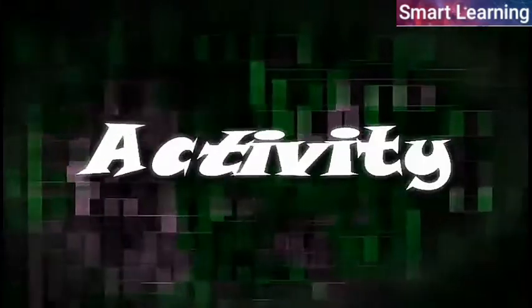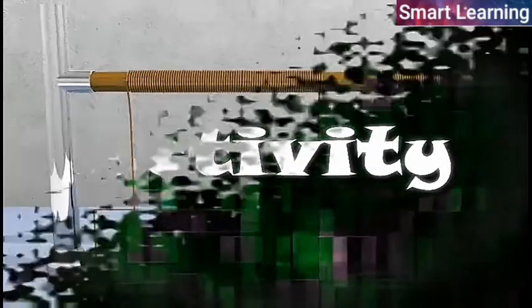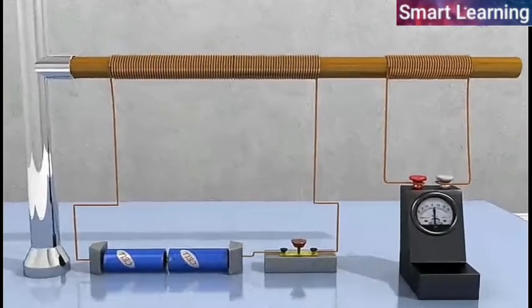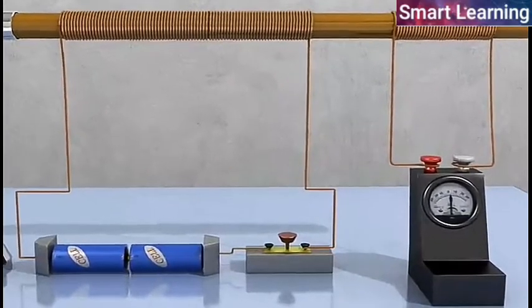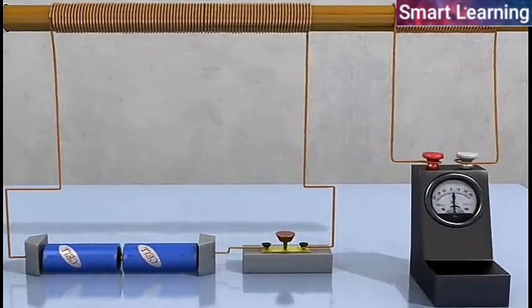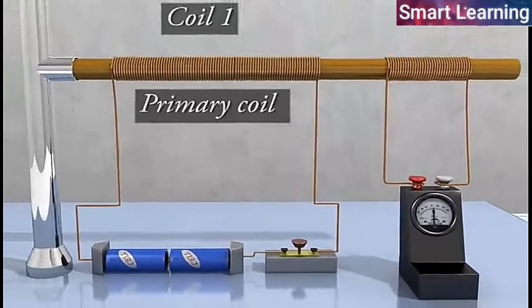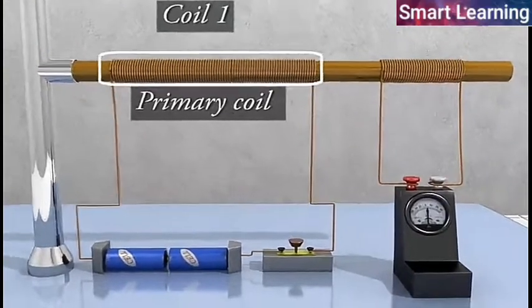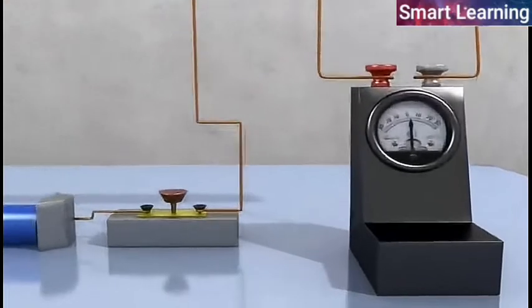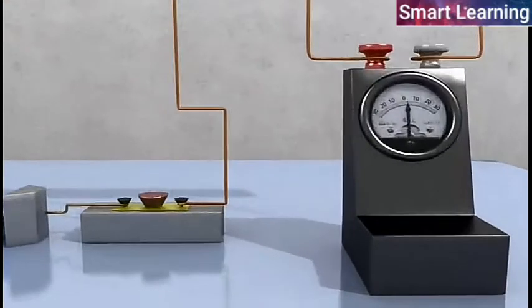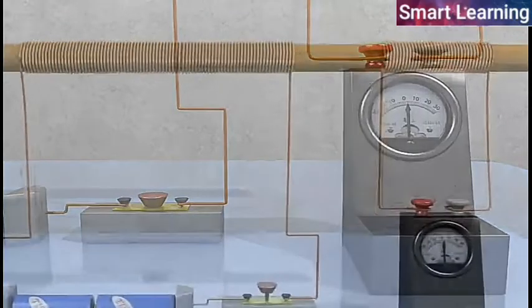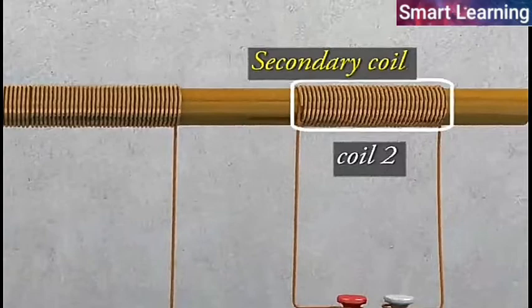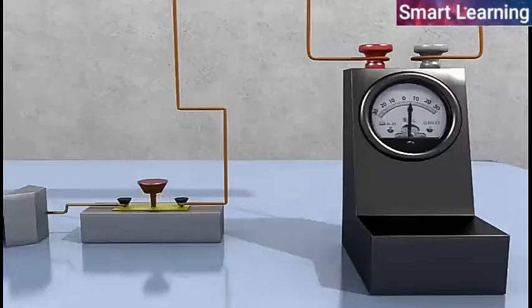Let's do an activity in which the moving magnet is replaced by a current carrying coil and the current in the coil is varied. In this figure, the magnet is replaced by coil 1. When current is made to flow in the coil 1, the primary coil, the needle of the galvanometer instantly jumps to one side and just as quickly returns to zero, indicating the momentary current in coil 2, secondary coil. A potential difference is induced in the coil 2 whenever the electric current through the coil 1 changes.